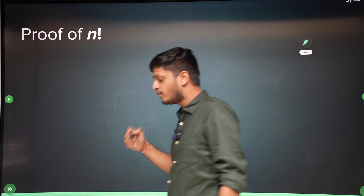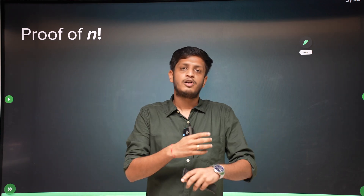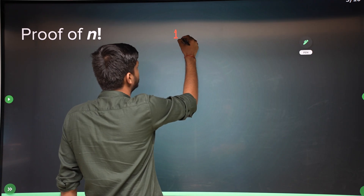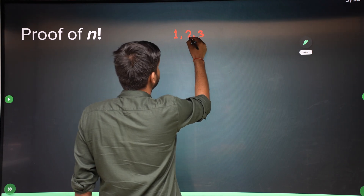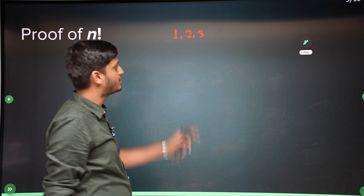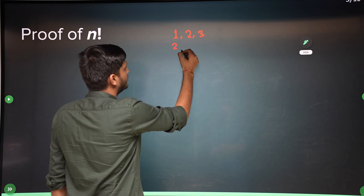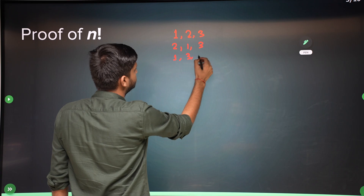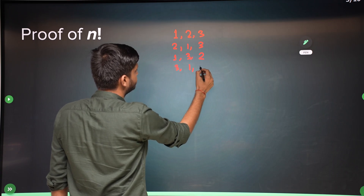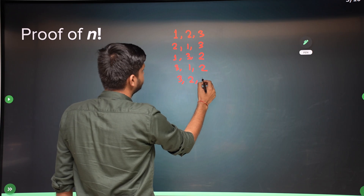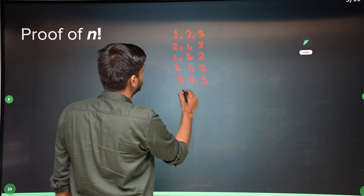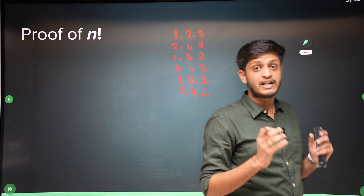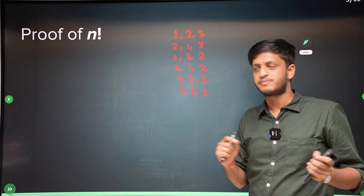Arranging elements in a certain order is called an arrangement, and n factorial is the number of all possible ways in which we can arrange n elements. For example, with three elements we can have: 1 2 3, 2 1 3, 1 3 2, 3 1 2, 3 2 1, and 2 3 1 — six possible arrangements.